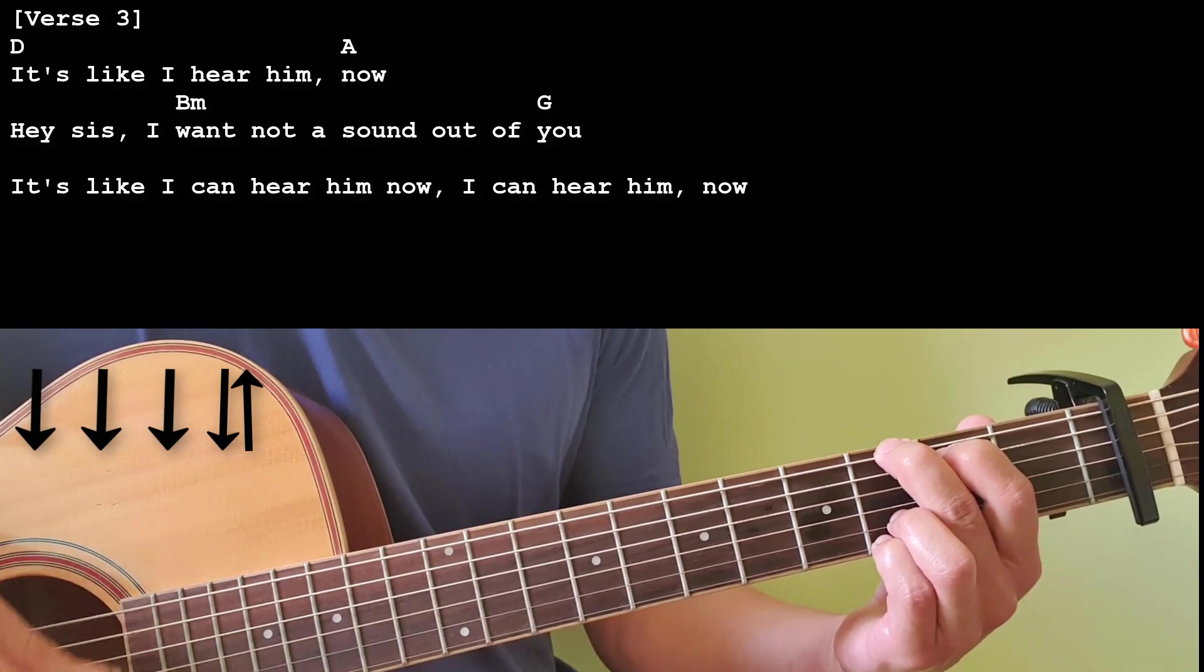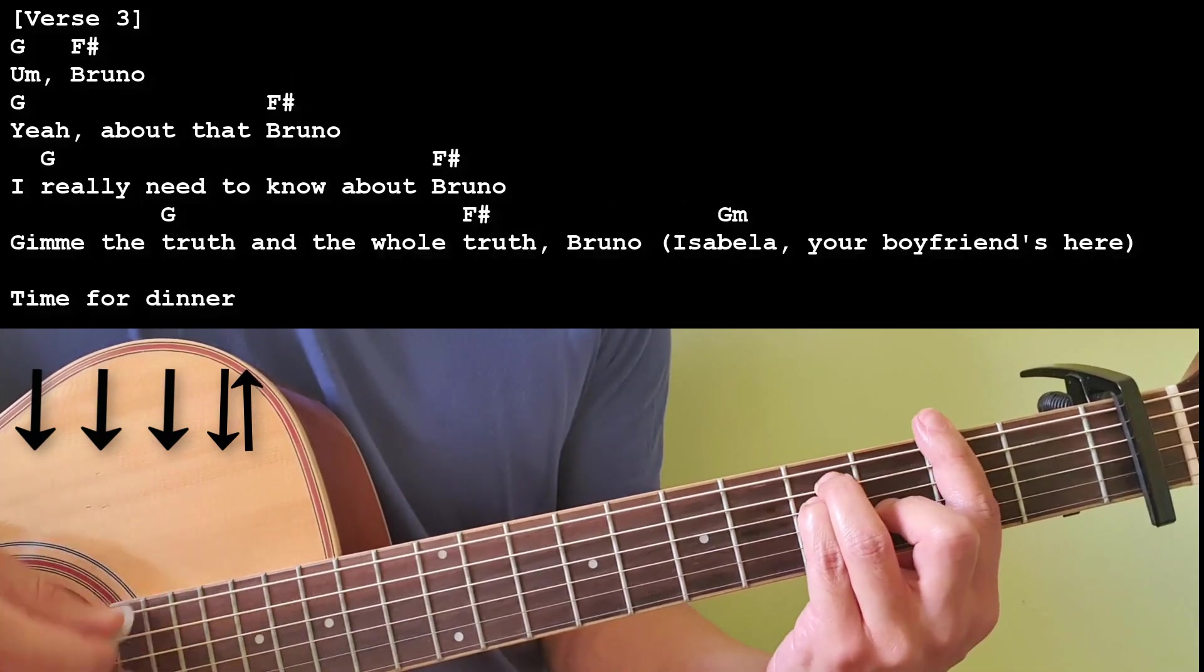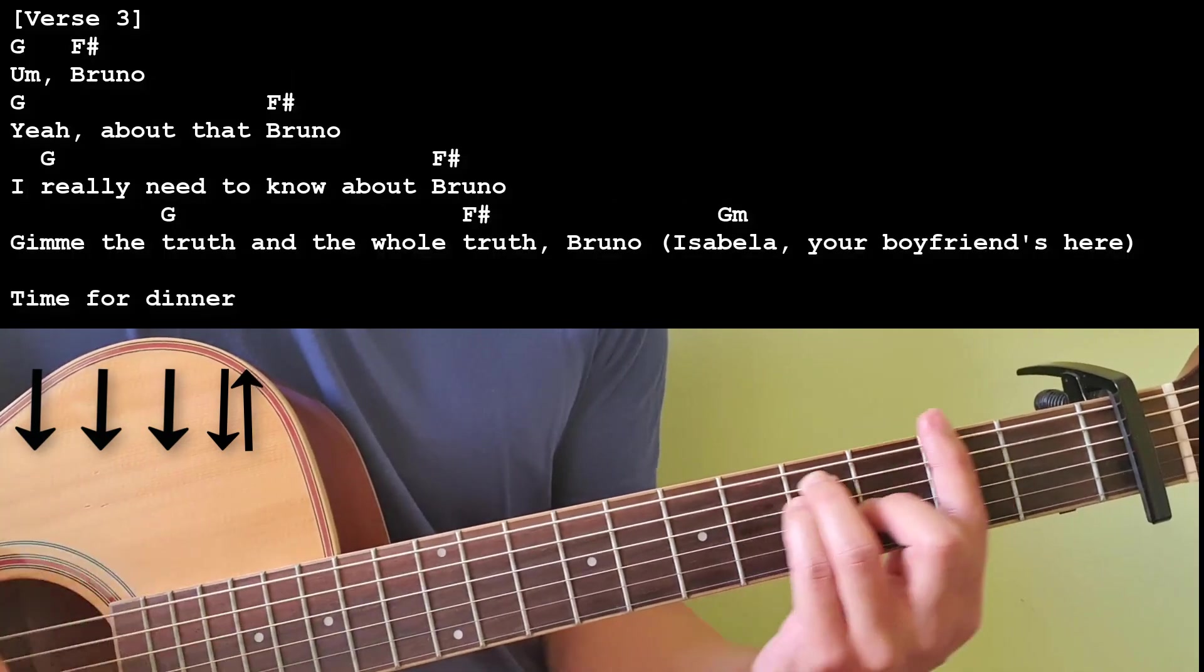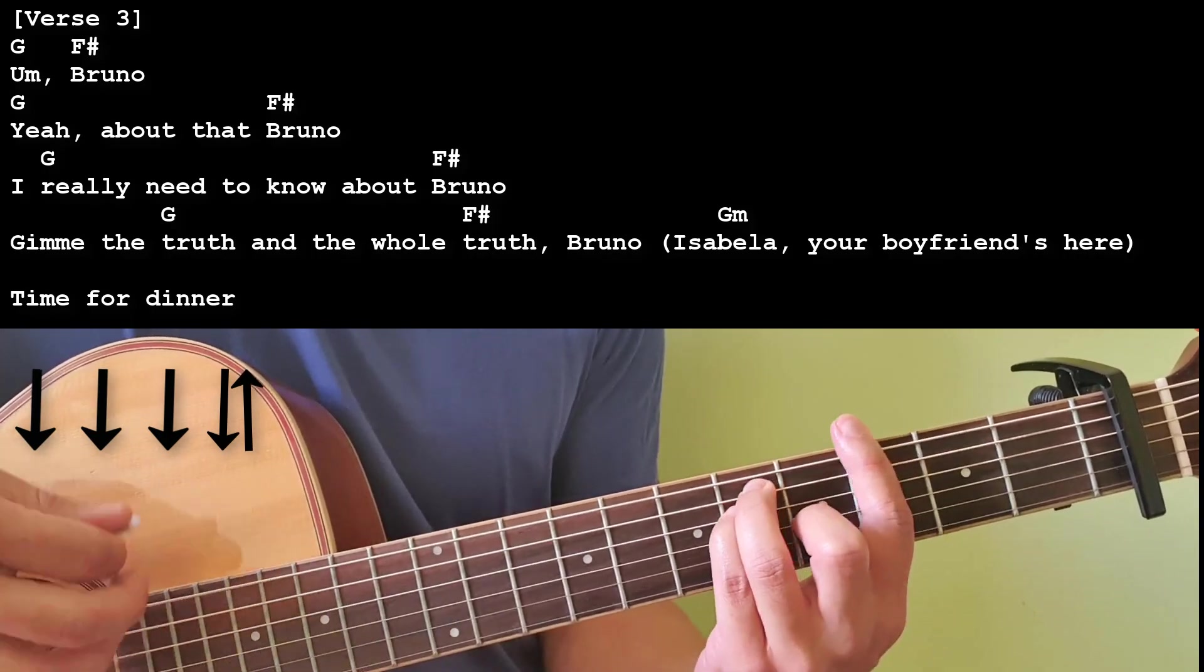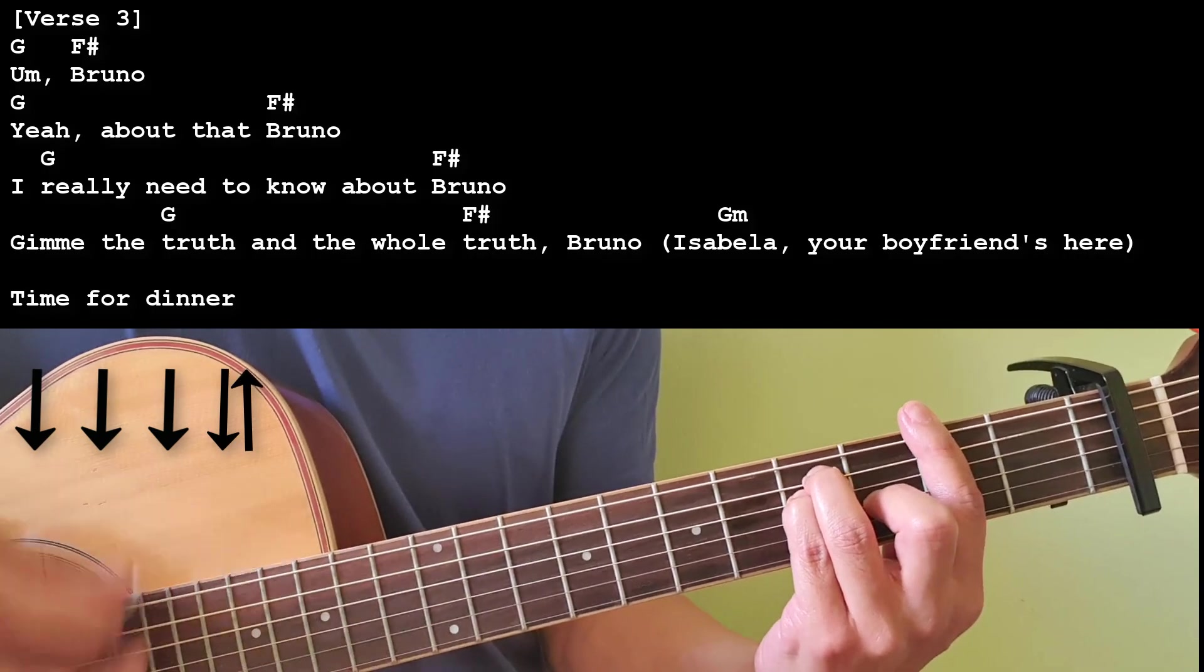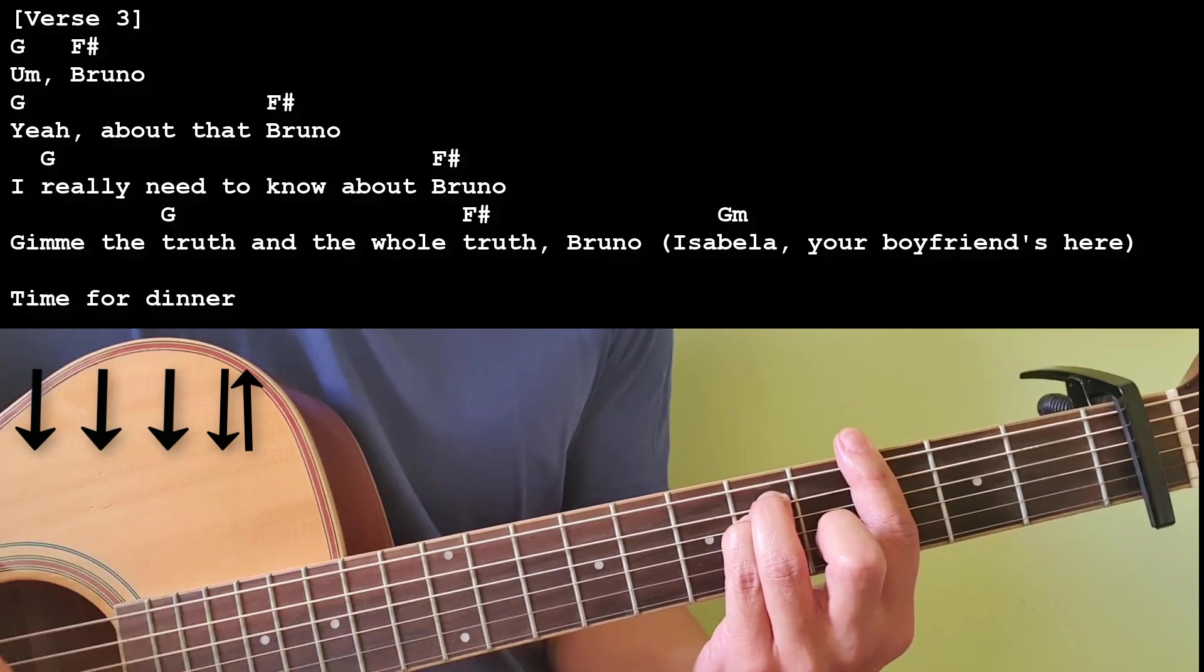I can hear him now. I can hear him. Bruno. Yeah, about that Bruno. I really need to know about Bruno, give me the truth and the whole truth Bruno. Isabella, your boyfriend's here. Time for dinner.